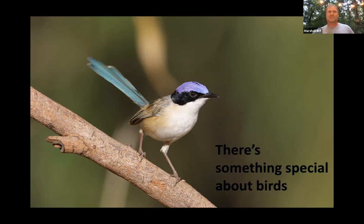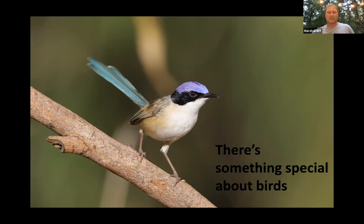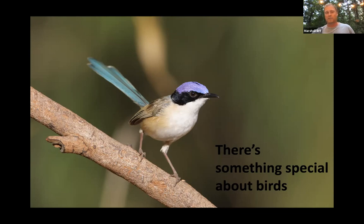There's something special about birds — they really engage people around the world. When eBird started we were standing on the shoulders of a century of amateur ornithologists who had grown up and sort of taken over the field from professional ornithologists in terms of thinking about bird distribution, occurrence, migration patterns, and population declines. There was already a long history of citizen science in the bird world. The real existential challenge we're facing is that eBird continues to grow at 30 to 40 percent a year, putting a bigger burden on our data quality network.